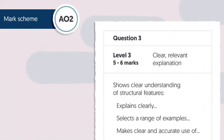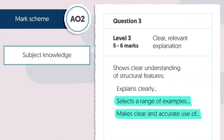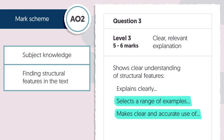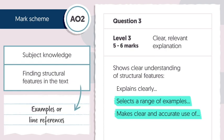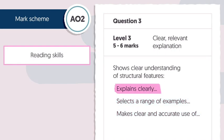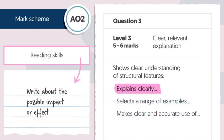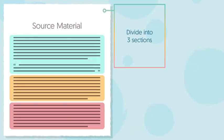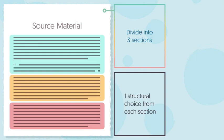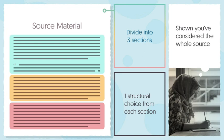Remember, in the mark scheme for AO2, the bottom two bullet points deal with you showing your subject knowledge. This means finding structural features in the text and showing you know what they are through examples or line references. The top bullet point is where you show your reading skills — this is where you write about the possible impact or effect the feature has on you as you read the text. A good tip as you plan for this question is to divide up your source material into three sections and try to work with one structural choice from each section. That way you'll have shown that you've considered the whole source.